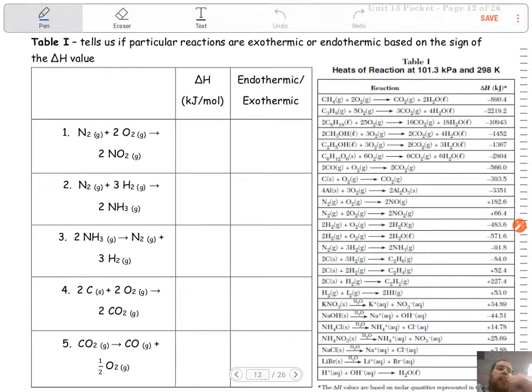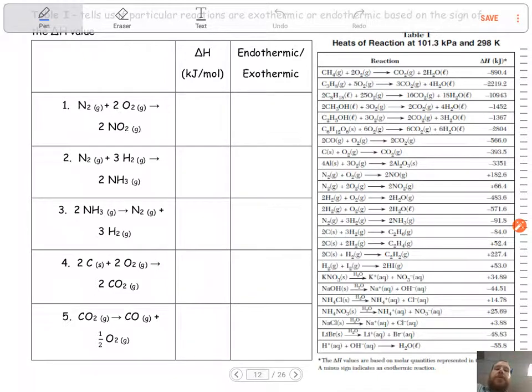So let's start off with an easier one. N2 plus 2O2 yields 2NO2. So you have table I, you're not asked to memorize anything. You've just got to know how to apply it and how to use this table.